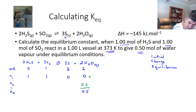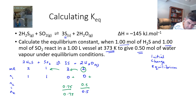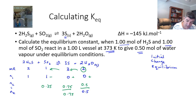Using our mole ratios, we take the 0.5 moles of water, divide by 2 and multiply by 3, giving 0.75 moles of sulfur. Carrying the ratios through, the change for H₂S is 0.25, and since the reactants are being consumed they decrease by that amount. With the coefficient of 2 for SO₂, the change is 0.5, giving equilibrium values of 0.5 for H₂S and 0.75 for SO₂.